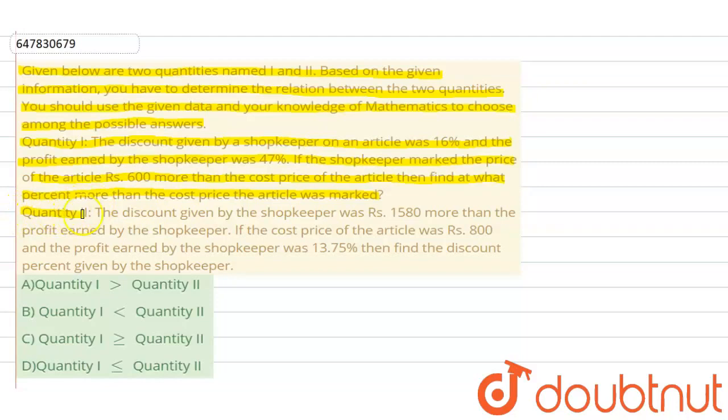Quantity II: The discount given by the shopkeeper was Rs. 1580 more than the profit earned by the shopkeeper. If the cost price of the article was Rs. 800 and the profit earned by the shopkeeper was 13.75%, then find the discount percent given by the shopkeeper.